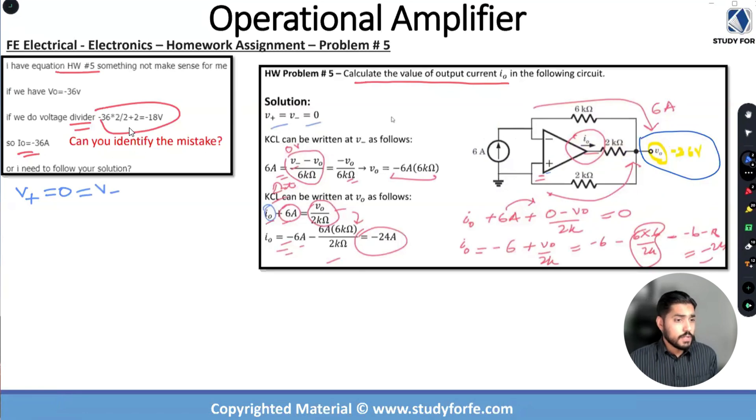And we've actually solved the circuit at this stage to be quite honest. When we know that this is zero volt and this is zero volt we have practically achieved our solution because in this circuit we have six amp entering. Is there any current going into the negative terminal? No, current can never enter the positive or the negative terminal of an operational amplifier. This six amp is going to travel through the six k resistor. So if I am writing a nodal equation at v minus what is the current entering this point over here? Six amps correct.